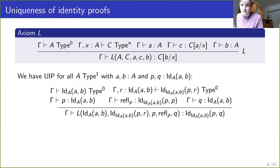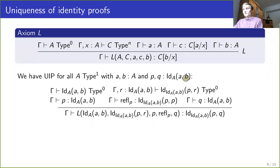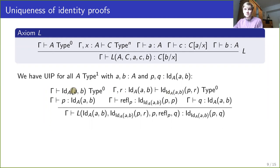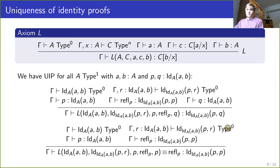Going one dimension up: one-types should behave like sets, so we want unique identity proofs, and this is indeed the case. Given two elements of a one-type A, we want to show that two proofs p and q that a and b are equal are themselves equal. We look at the identity type on A, which is itself a zero-type, and we look at the type C which is all proofs equal to p. We just need to show C is inhabited for any element — we choose p since reflexivity of p always exists — so we get for q a proof that the two proofs are equal, and the computation rule follows from Axiom L.